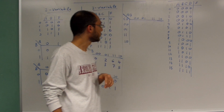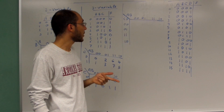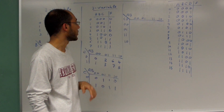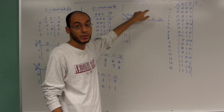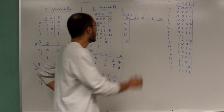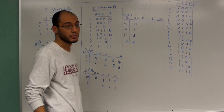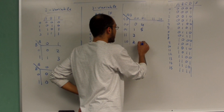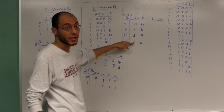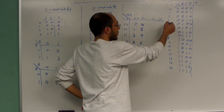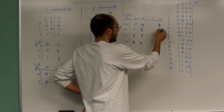The four variable k-map has 16 rows. I list AB on the horizontal and CD on the vertical. AB follows Gray code: zero-zero, zero-one, one-one, one-zero — remember that one-one precedes one-zero. You then fill it in column by column: zero, one, two, three, four, five, six, seven in the first group.